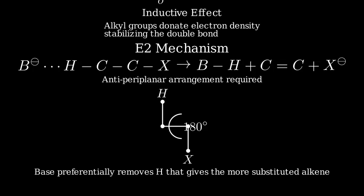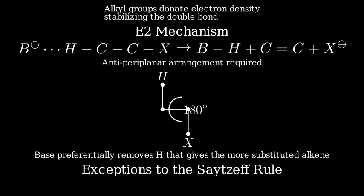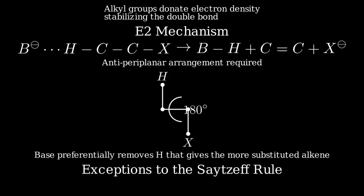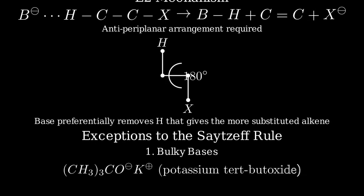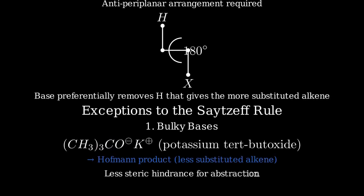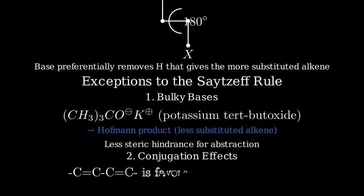While the Zaitsev rule is generally reliable, there are some important exceptions to be aware of. One major exception involves bulky bases like potassium tert-butoxide. These bulky bases often give what's called the Hofmann product, the less substituted alkene. This happens because it's sterically easier for these large bases to abstract a less hindered proton.